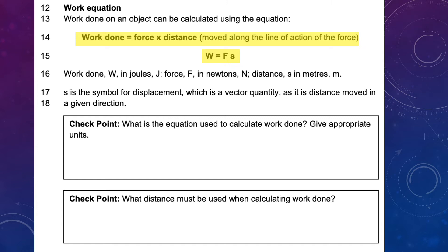Later we'll learn about rearranging this equation to get two more equations. Whenever you learn a new equation, you must know the units. Work is measured in joules. Energy is also measured in joules — these two are interchangeable. If you're given a value in joules, you can use it for work or energy. Force is always measured in newtons, and weight is also in newtons.